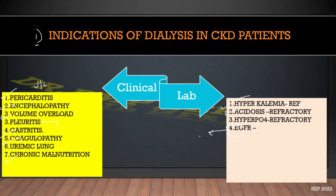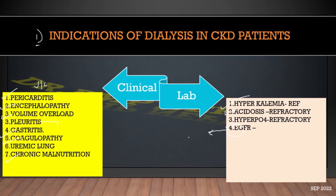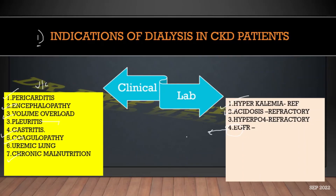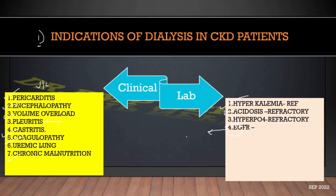The eGFR cutoff for an absolute indication to start dialysis is less than 10. At eGFR of 5, there are a few trials which have compared starting dialysis at eGFR of 5 to 7, and a few have started from 10 to 15 — there is no gross mortality benefit shown. So for the eGFR cutoff in stage 5 CKD, whenever the manifestations occur, that might be the point where dialysis has to be started.